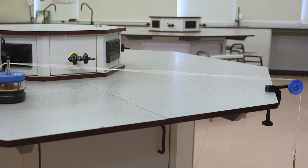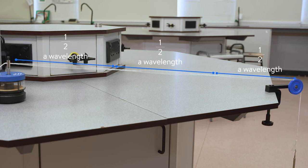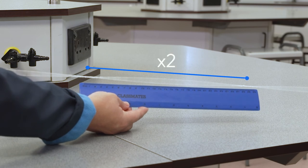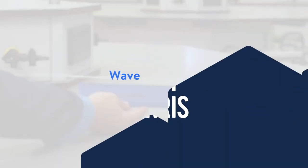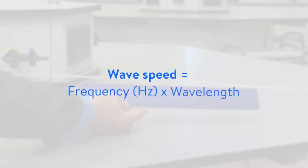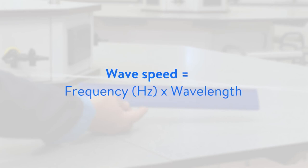Each of the three waves is half a wavelength. So if we measure one of the waves and multiply by two, this will give us one full wavelength. Then using the equation wave speed equals frequency times wavelength, you can calculate the wave speed.